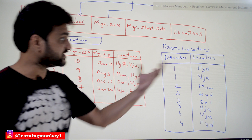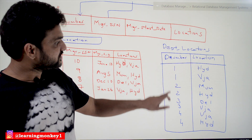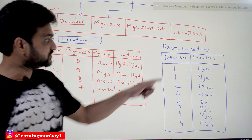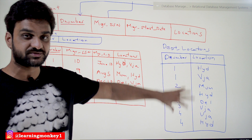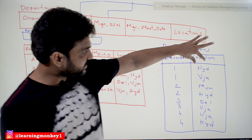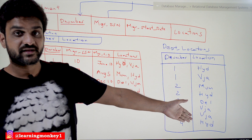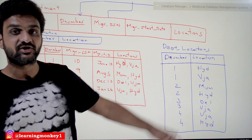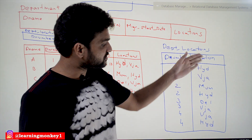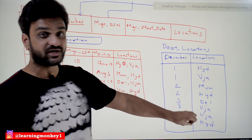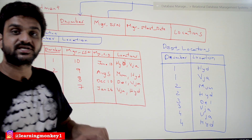If you take department number, can it be a primary key? No — department numbers appear in multiple rows. If you take location, can it be a primary key? No — Hyderabad and Vijayawada appear in different rows as well. So neither column alone can be a primary key.